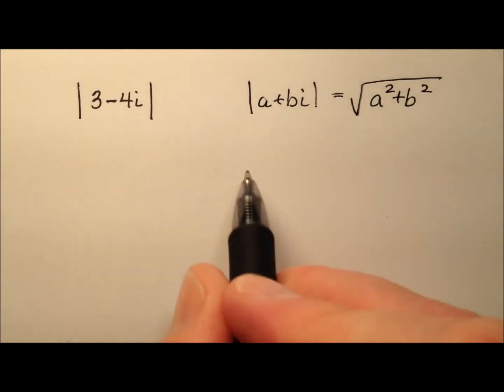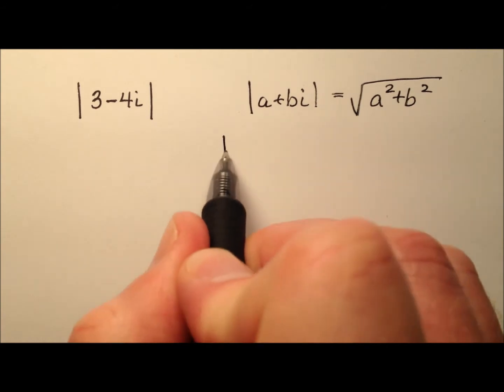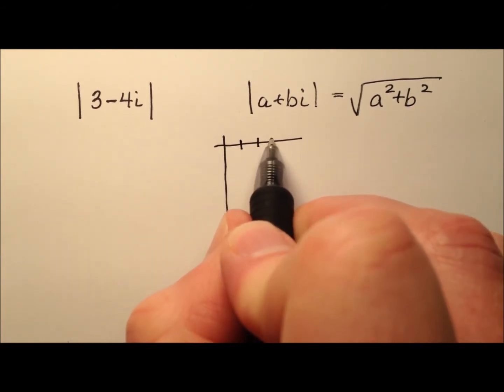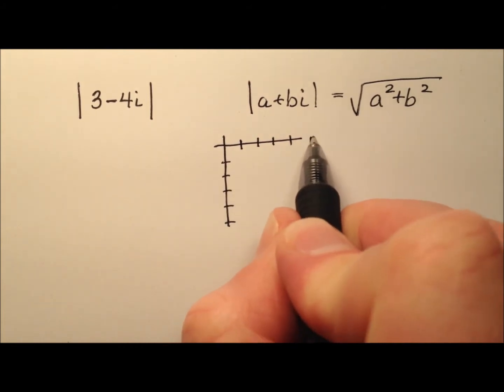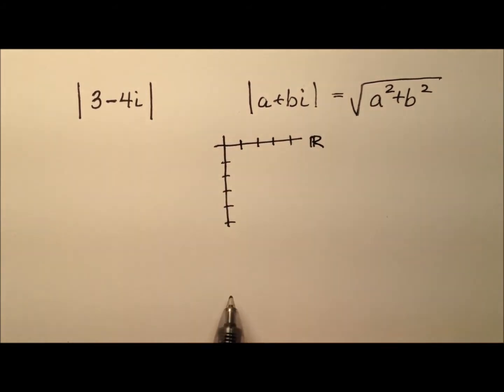And where does this come from? Well, it comes from our complex plane because we can plot any complex number in the complex plane where the horizontal axis is the real number line and the vertical axis is the imaginary number line.